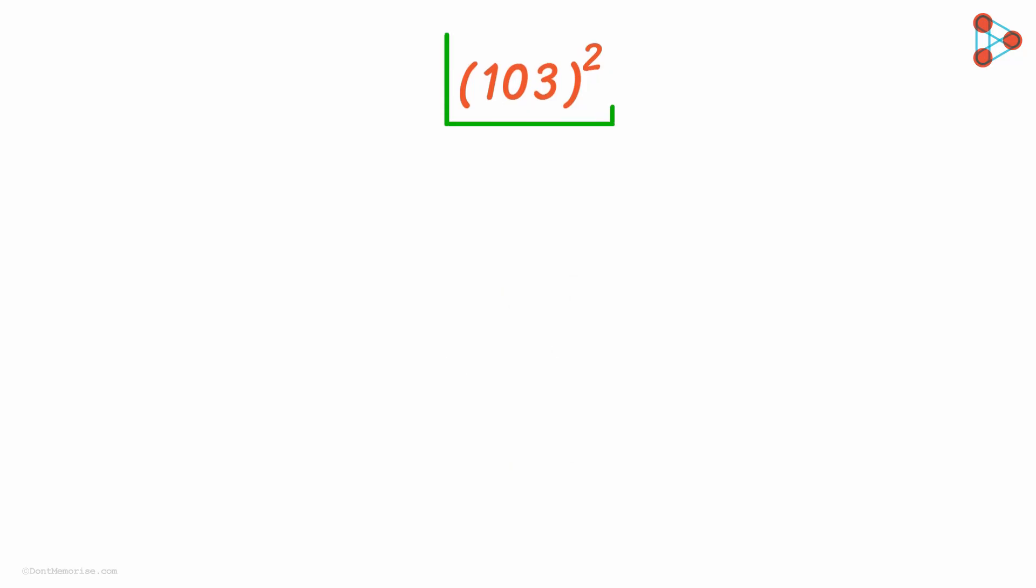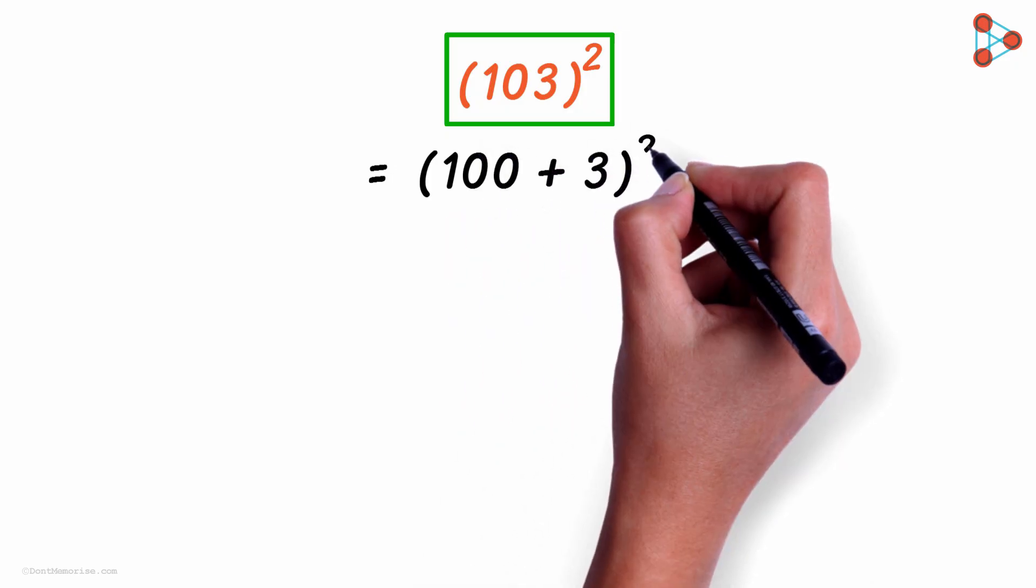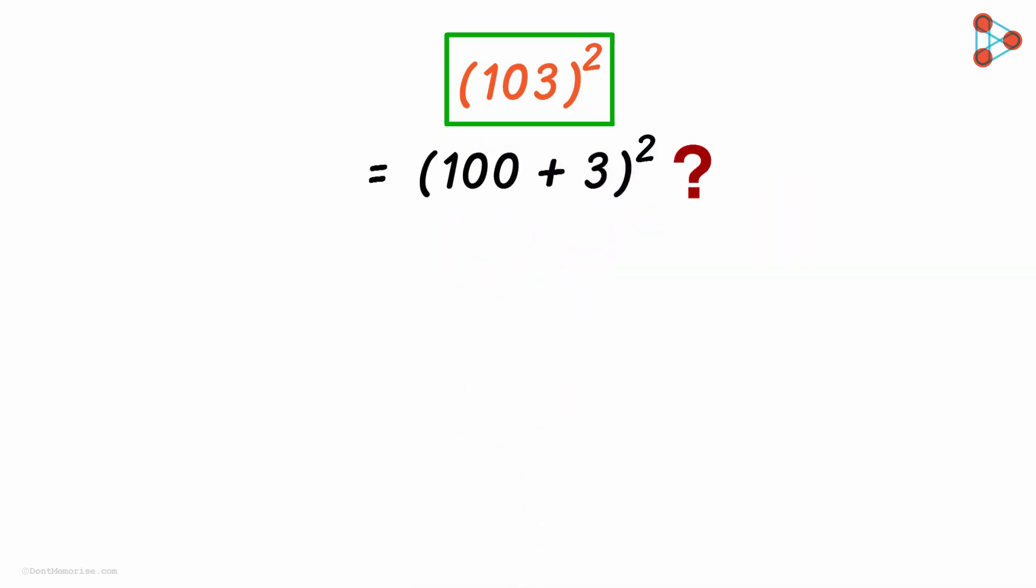Can we write one hundred and three the whole squared as one hundred plus three the whole squared? Will it do? Surely, why not? Both these values are equal to each other.